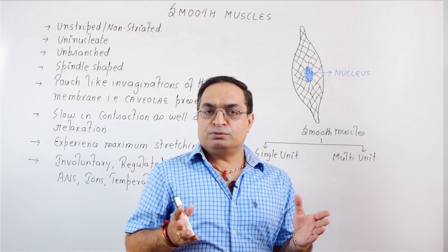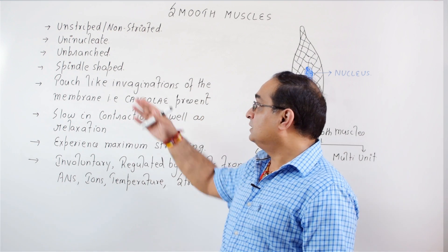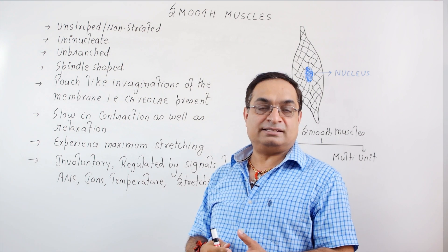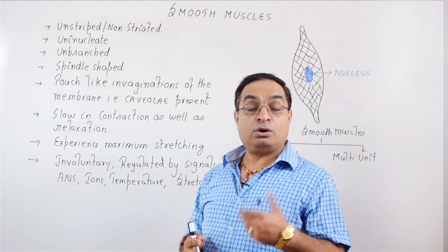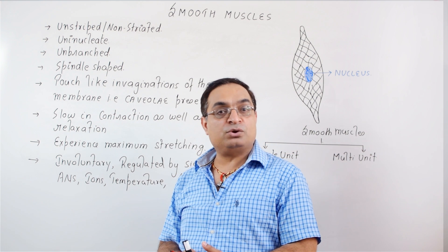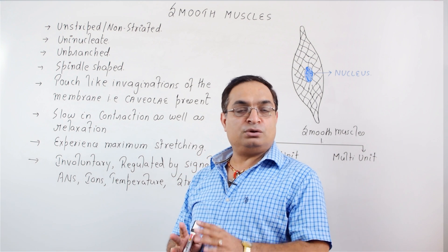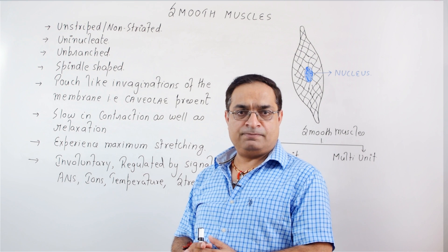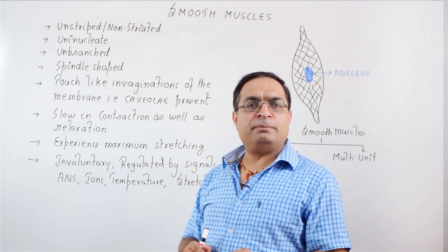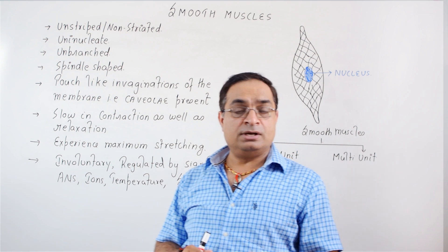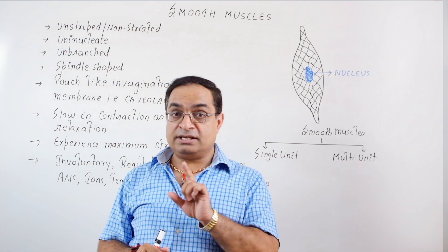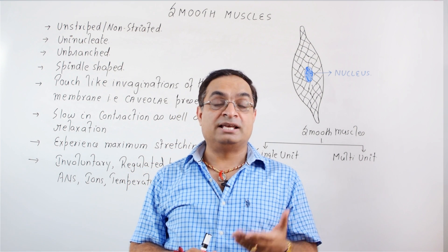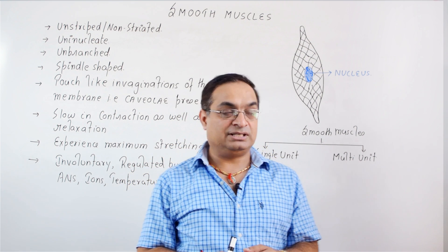Smooth muscles are also called the unstriped or non-striped muscles because when viewed under a simple microscope, these do not show alternate light and dark bands. Myosin and actin filaments are present but these are not arranged to form sarcomeres, as in the case of skeletal muscles.